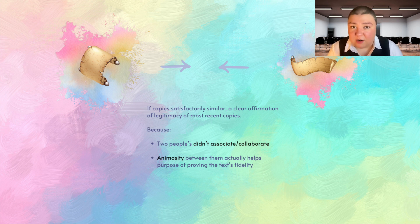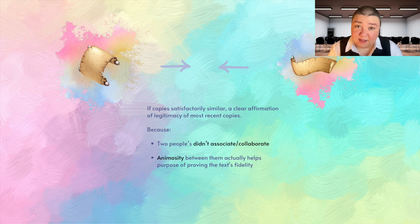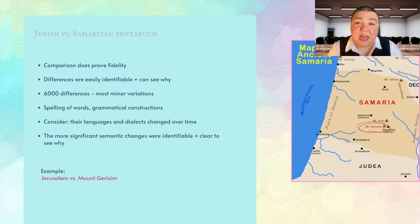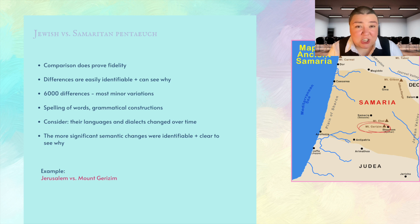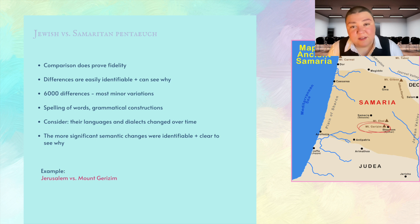The animosity between the Jews and Samaritans actually serves the purpose of proving the text's fidelity — because these two peoples did not compare or associate. Some 6,000 differences were found between the two, which may initially sound like a lot, but most were minor variations such as the spelling of words or grammatical constructions. This is to be expected when languages and dialects change over time and differ from each other. The most significant semantic changes were easily identifiable, and we can see why they were made.